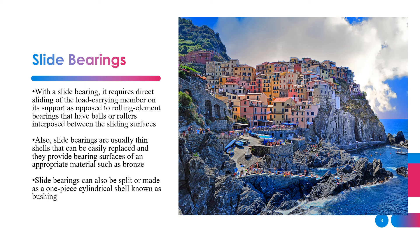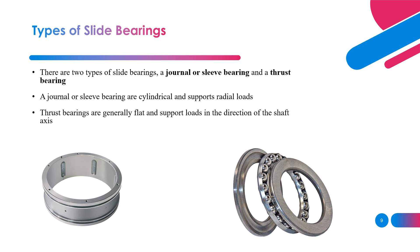With a slide bearing, it requires direct sliding of the load-carrying member on its support, as opposed to rolling element bearings which have balls or rollers interposed between the sliding surfaces. Slide bearings are usually thin shells that can be easily replaced and provide bearing surfaces of an appropriate material such as bronze. They can also be split or made as a one-piece cylindrical shell known as a bushing. There are two types of slide bearings: a journal or sleeve bearing, which is cylindrical and supports radial loads, and a thrust bearing, which is generally flat and supports loads in the direction of the shaft axis.